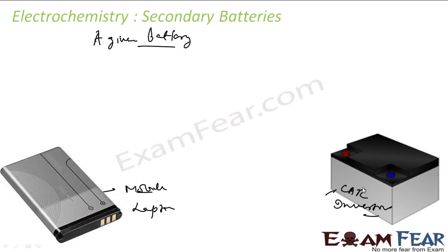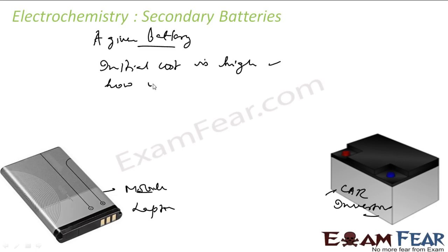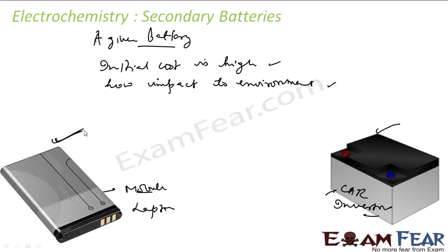The initial cost of secondary batteries is pretty high, but the overall cost is less because you use the same battery for a longer period of time, and they have low environmental impact. Examples include the lead storage battery used in vehicles, the nickel cadmium battery, and the lithium-ion battery used in mobile phones.